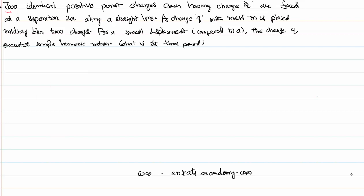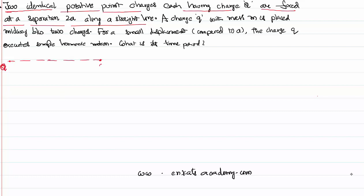Hello everybody, welcome to this video lesson. We are solving a problem from electric charges and fields. There are two identical positive point charges, each having charge Q, fixed at a separation of 2a along a straight line. Let me draw a diagram: charge Q here, another charge Q here, separated by distance 2a. A charge q of mass M is placed midway between the two charges, so each side distance is a.